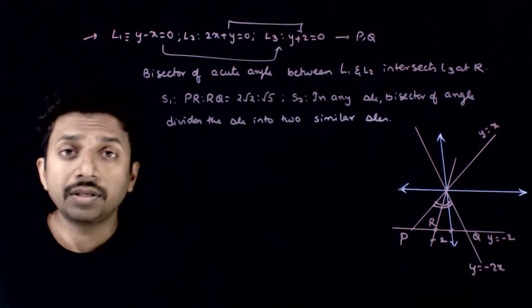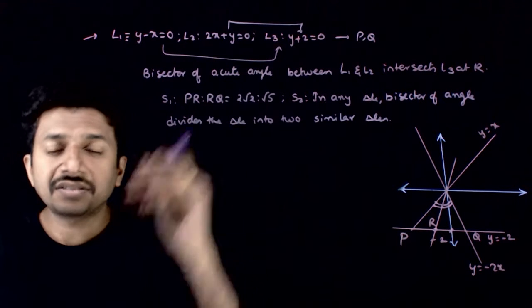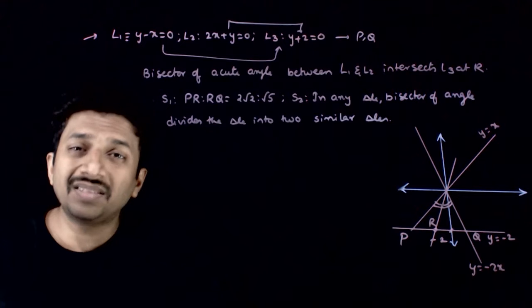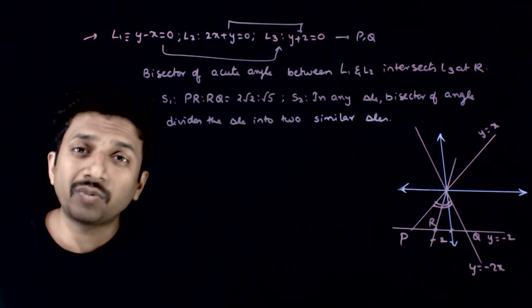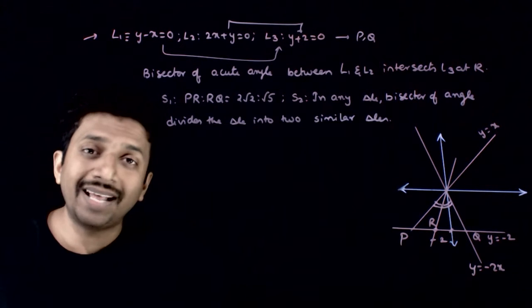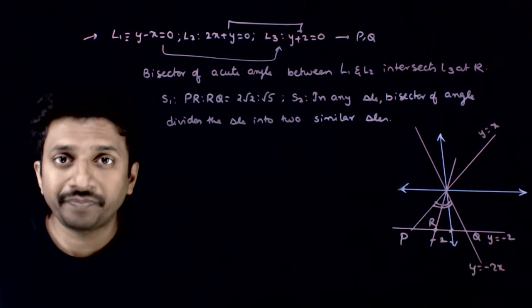Welcome students. In this question, you have been given three lines. L1 is y = x, L2 is y = -2x, and L3 is y = -2.